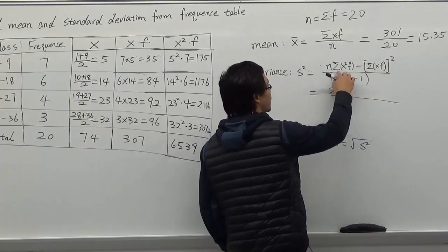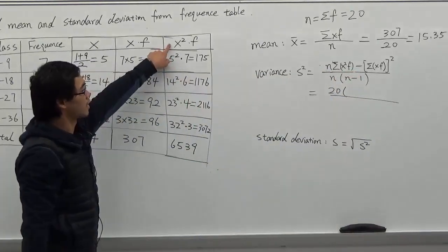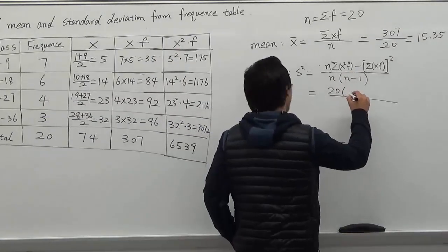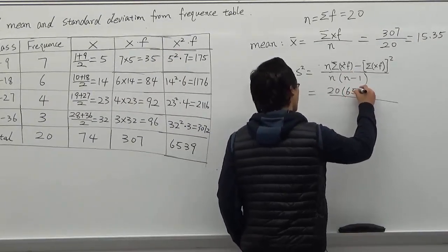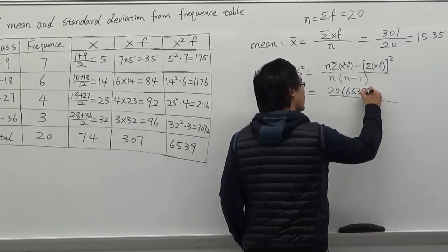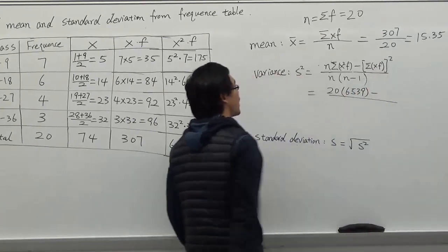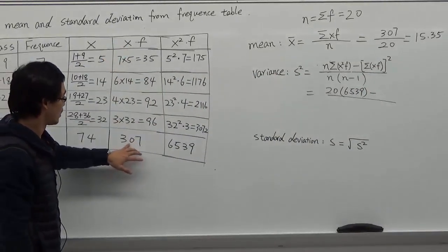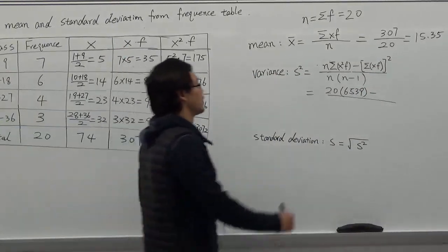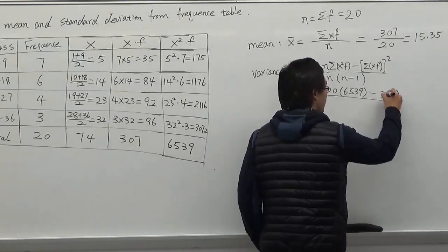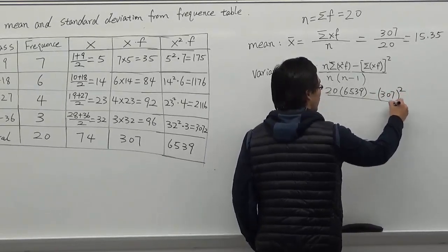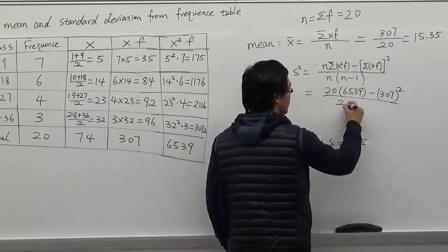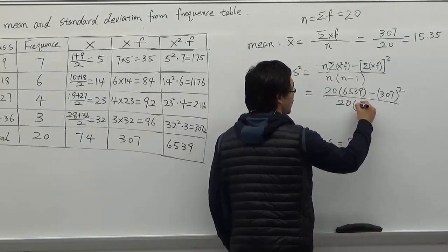Multiply summation of x squared f. Summation of x squared f is 6,053. And then minus summation of xf and then square. Summation of xf is 307, and then square. And then over n is 20 here, multiply n minus 1.